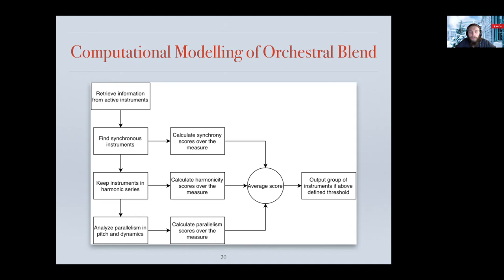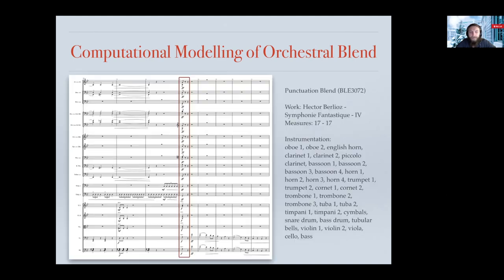The second step is to look if there is harmonicity in the group of synchronous instruments, performed in two ways. First, for each onset using intervals, the algorithm looks if the notes are in a harmonic series, using the lowest note as a root, working similarly to applying a harmonic template. If this is negative, the algorithm evaluates if there is a harmonic structure formed by the notes played, following traditional Western tonal chord rules. For example, in the blend from the fourth movement of Berlioz's Symphonie Fantastique, the notes are spread across several octaves and don't form a harmonic series. However, we have a G minor chord with notes G, B-flat, and D played by different instruments — a root, a minor third, and a perfect fifth.